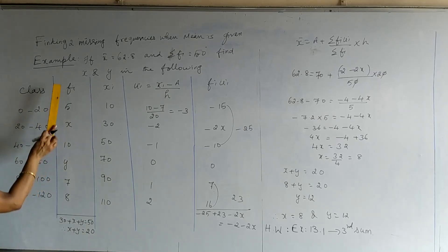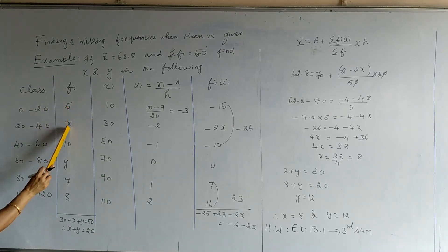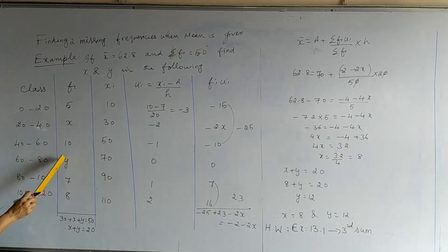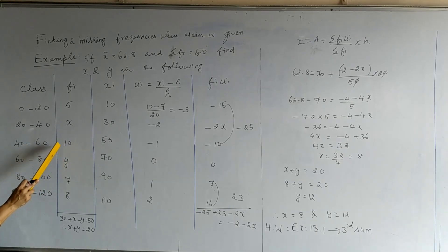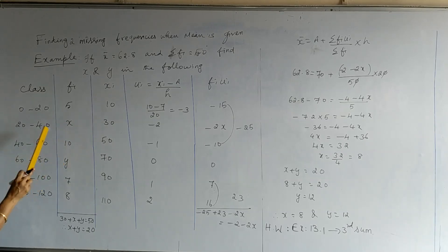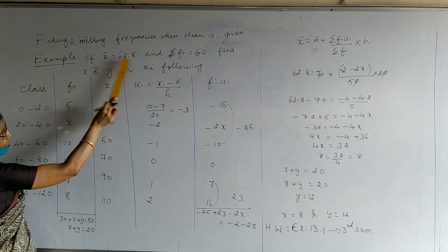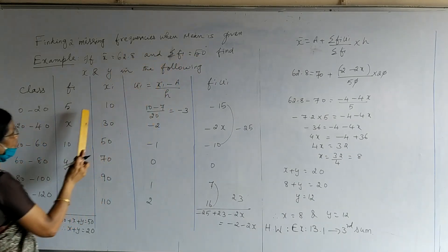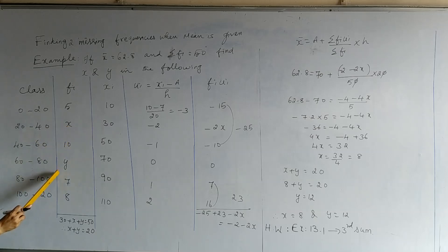In this example, we are going to find out two frequencies which are missing. In the previous one, we found only one frequency. But here, we are going to find out two frequencies, x and y. Two datas are given: x̄ is given, and sigma fi is given. Using these two, we are going to calculate the values of x and y. You can see the classes are of equal length. Therefore, we are going to use step deviation method.